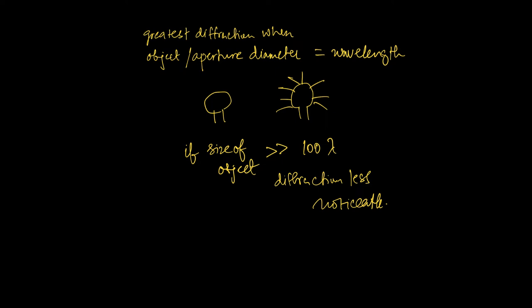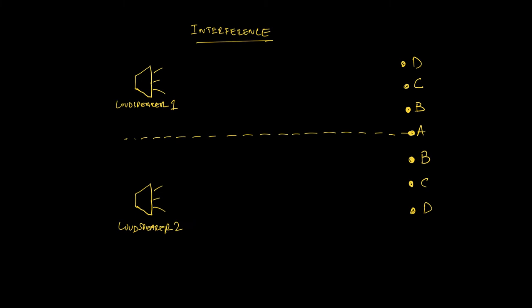There's another phenomenon called interference. Imagine you have two loudspeakers a little bit far apart from each other, and you are standing at point A. You're going to hear a loud sound at point A, a quiet sound at point B on either side, back to loud at point C, and then quiet at point D. The answer to why this happens lies in interference. We'll return to this loudspeaker example at the end.